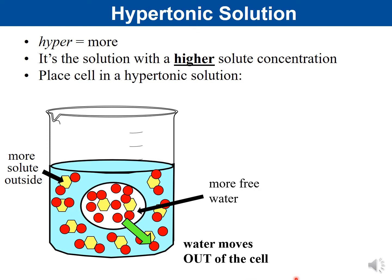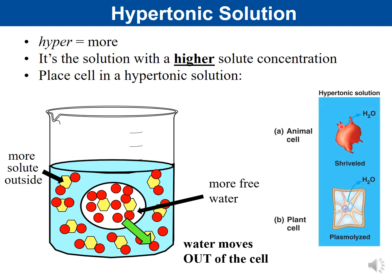When water moves out of a cell in a hypertonic solution, animal cells shrivel up. Plant cells also lose water, but because they have a rigid cell wall, the whole cell doesn't shrivel. Instead, the cell membrane shrinks away from the cell wall — this is called plasmolysis. You will actually visualize plasmolysis in lab this week.